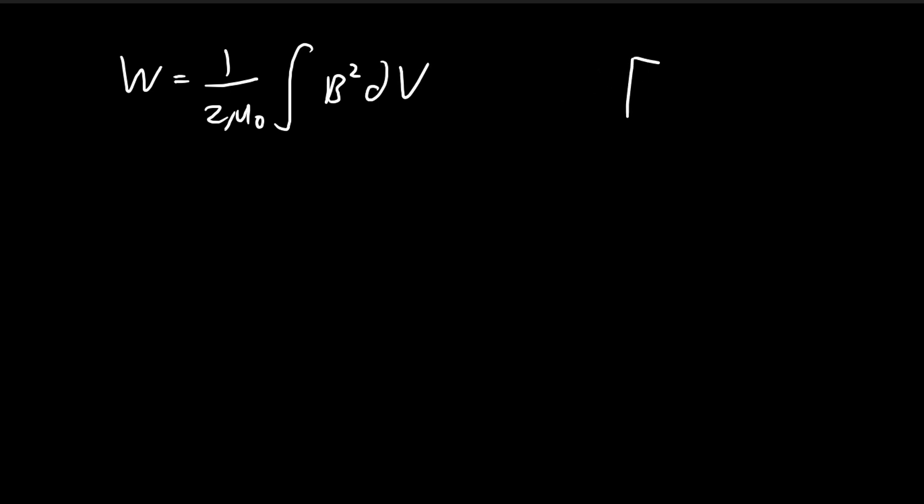For a toroid with a cross section that looks something like this, you can imagine this part being the center of the entire toroid. Over here I'm gonna let this length be equal to a, and then this length here all the way to the end will be equal to b, and then this will have a height of h.